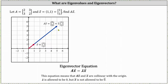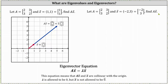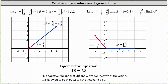But this is not always the case. For example, if we take a look at the same matrix A and now consider the vector [-2, 3], let's calculate matrix A times vector X. In this case, matrix A times vector X is the vector [5, 0]. We can quickly see vector X and matrix A times vector X are not collinear or parallel, which indicates the eigenvector equation is not satisfied.